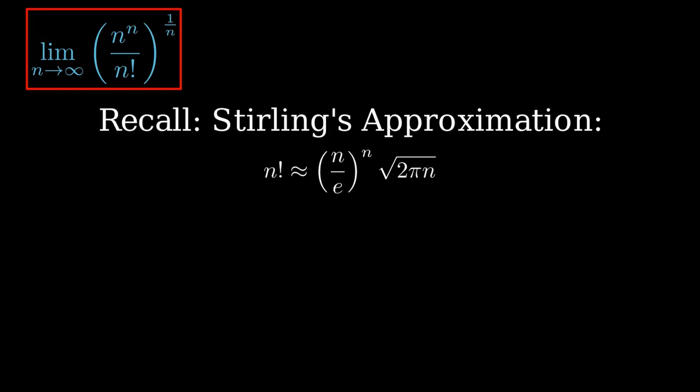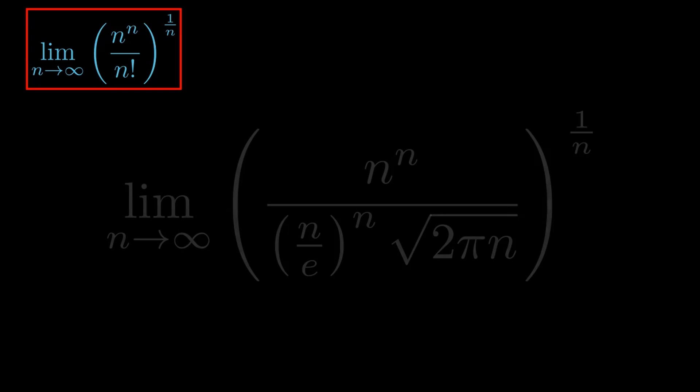First, recall Stirling's approximation. Stirling's approximation says we can approximate n factorial as n divided by e raised to the first power, all raised to n, multiplied by the square root of 2πn.